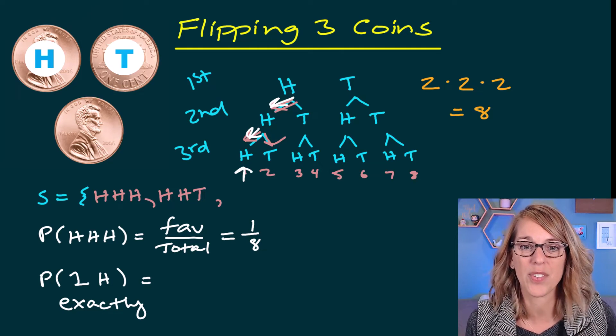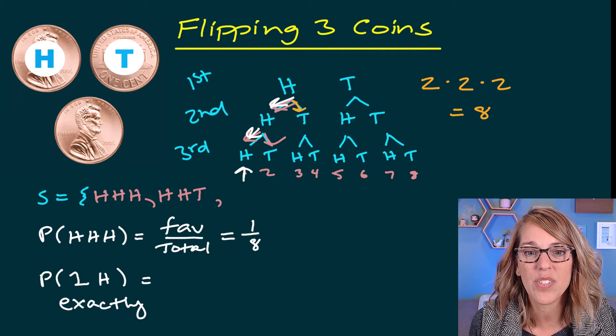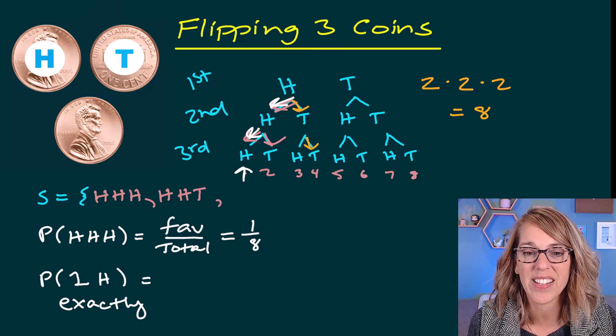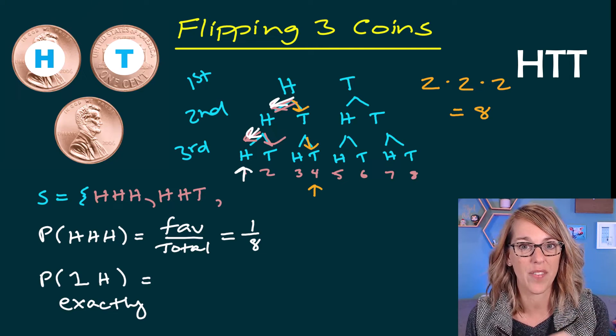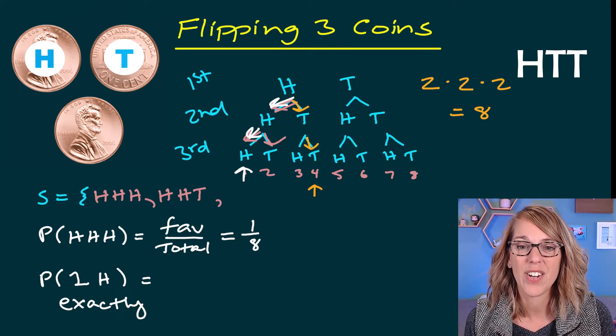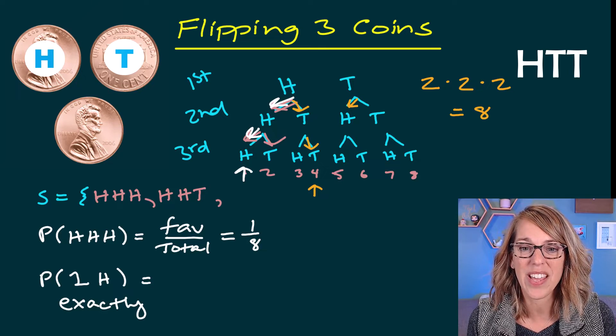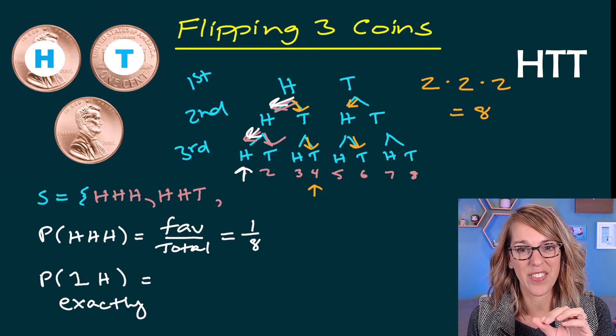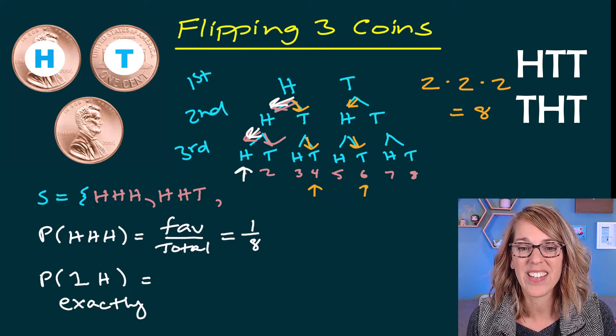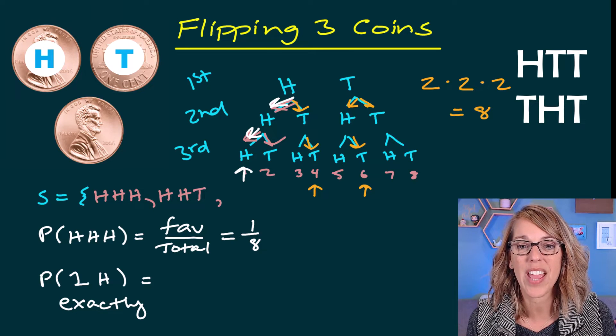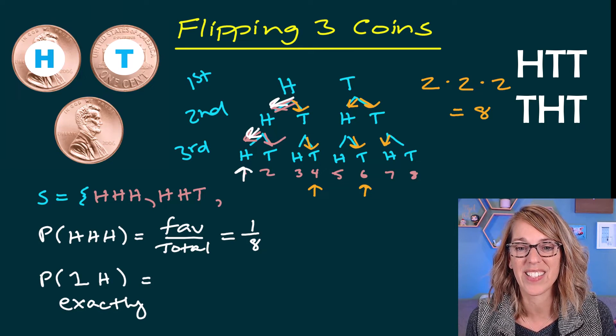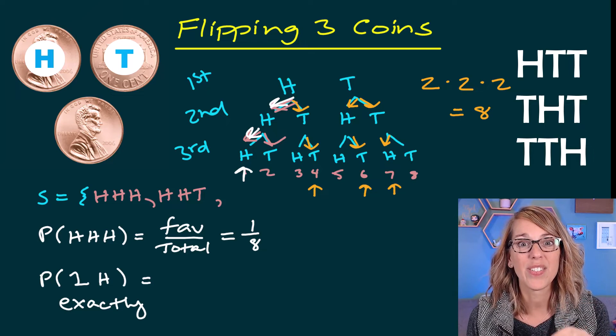So if I start with head on the first coin, I would want two tails after that. So this is a favorable outcome. If I start with tails, I can go ahead and take a head on the second, a tail on the third. So there's another favorable, or I could do tails and then tails and then heads. There's my third.